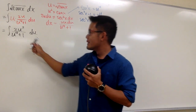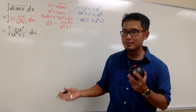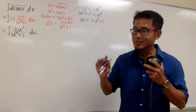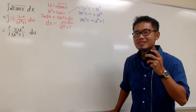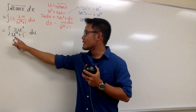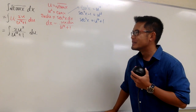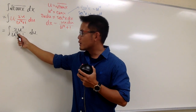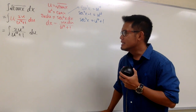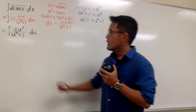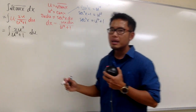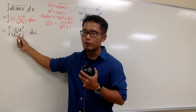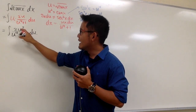Usually we would factor the denominator and do partial fractions. But if you look at u⁴ + 1, it is factorable, but don't factor it — it's not going to be nice. The trouble is that we have u to the fourth power plus 1, and the power is slightly too high. Is it possible to somehow reduce the power? We do have a u squared on the top, so maybe we can utilize that. Why don't we try dividing everything by u squared?